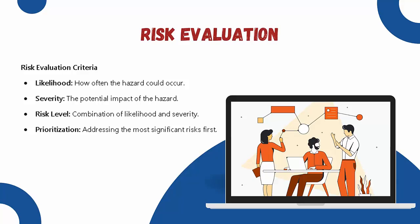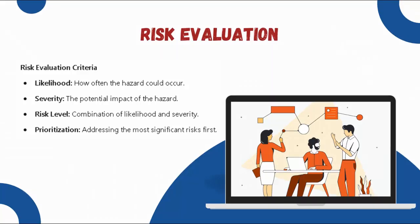When evaluating risk, consider the following criteria. The first is likelihood — how often a hazard could occur. The second is severity — the potential impact of the hazard. The third is risk level — a combination of likelihood and severity. The fourth is prioritization — addressing the most significant risks first. This helps in effectively prioritizing and managing risk.